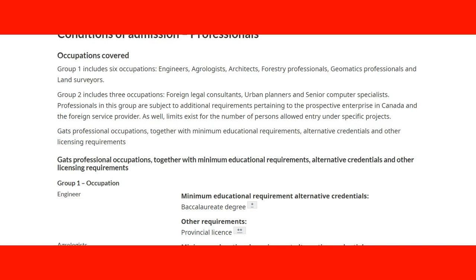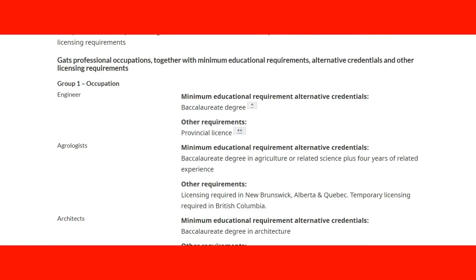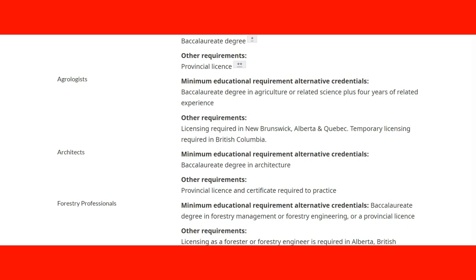It's important to know the requirements for each group. For example, in group one, engineers need to meet a minimum educational requirement of a bachelor's degree and a provincial license, as it is a regulated profession. For agrologists, a bachelor's degree in agriculture or a related science plus four years of related experience is required, with licensing required in New Brunswick, Alberta, and Quebec, and temporary licensing required in British Columbia. Every province has different requirements for certain professions — what is regulated in one province is not necessarily regulated in another.